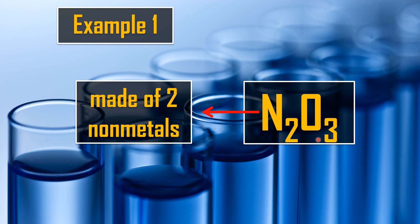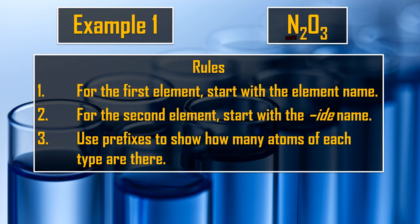In this example, we have N2O3. N is nitrogen, which is a nonmetal, and oxygen is also a nonmetal element. Let's start naming this given example. We have N2O3. The first step is, for the first element, start with the element name. Our first element is nitrogen, so we will start with nitrogen. For the second element, start with the IDE name. Our second element is oxygen, so it's oxide. So we have nitrogen oxide. Now, use prefixes to show how many atoms of each type are present.